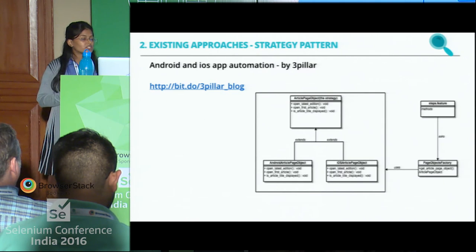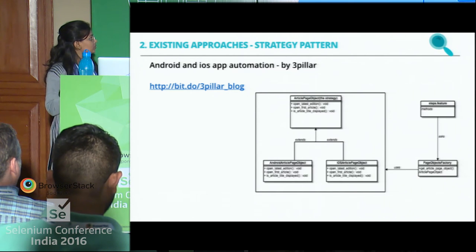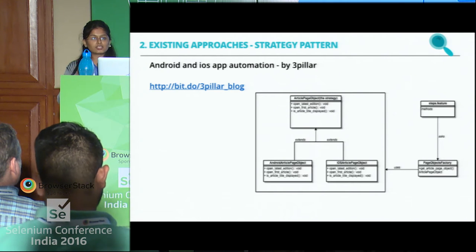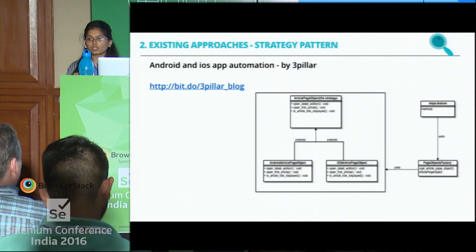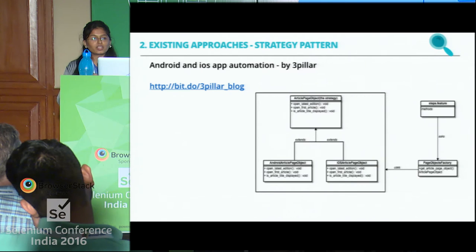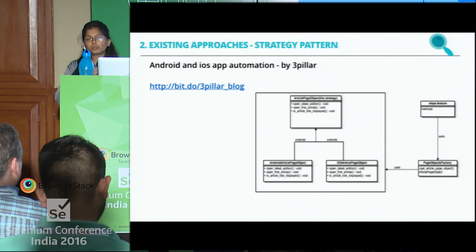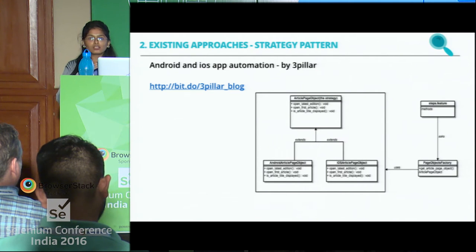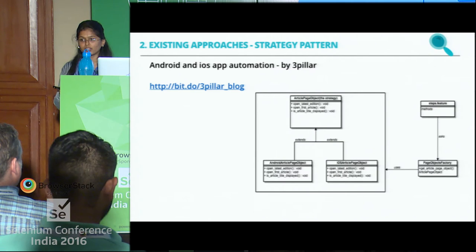Another approach is a strategy pattern — essentially simple inheritance. There is a base page and Android and iOS pages extend from that base page. The base page defines a contract; for our food app it would be 'order food' or 'place order' and 'checkout.' Both platforms implement that — in our case we'd have a third platform additionally. A third similar approach is a screen object pattern using Calabash iOS and Calabash Android, with respective pages inheriting from a base page.